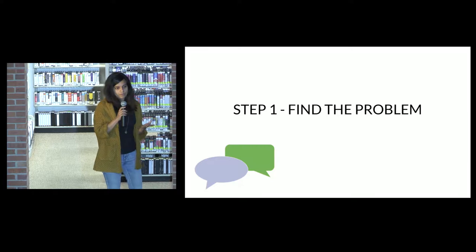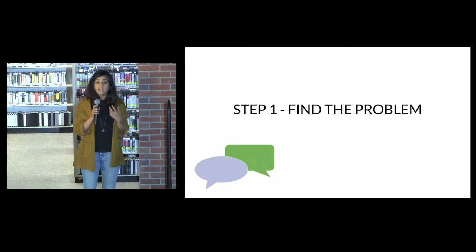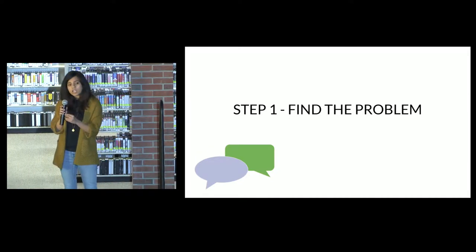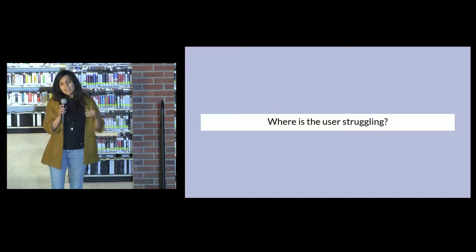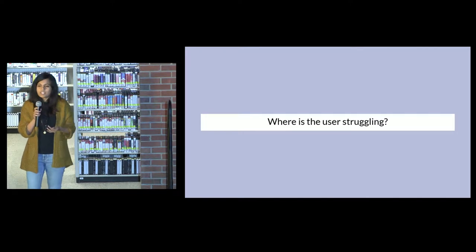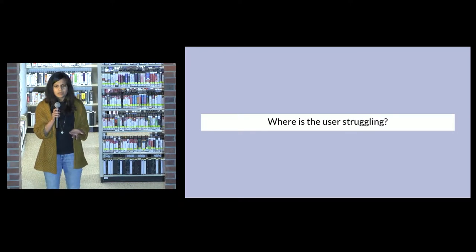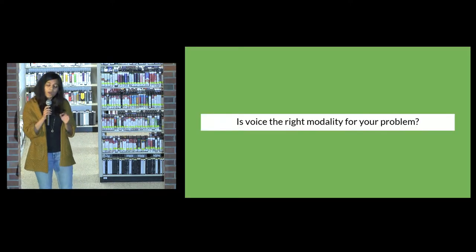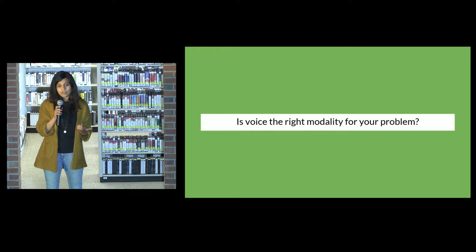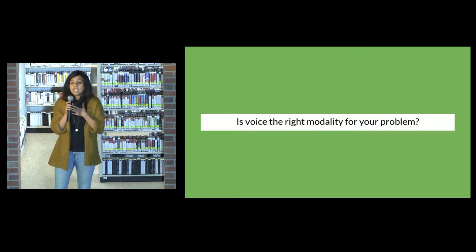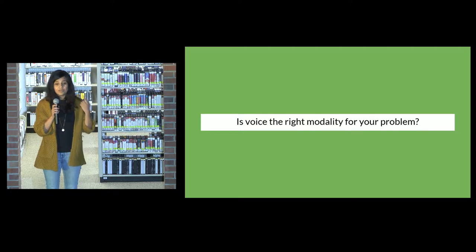Step number one is to find your problem. You want to look at where the user is struggling the most and what are the gaps in the current user experience. For me, I needed somebody to speak to in Chinese — that was the gap I wanted to bridge. You also want to think about whether voice is the right modality for your solution. Can your problem be solved using an Instagram filter or a website? One way to know is to think about the context of use: when, where, and why is your user going to use your product? For me, I needed someone to talk to and someone whose pronunciations I could listen to, so voice made perfect sense.